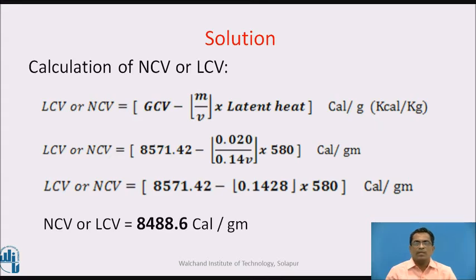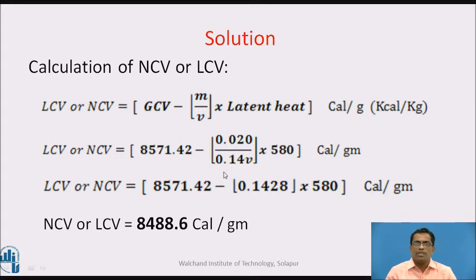LCV can be calculated using the formula: LCV or NCV = GCV − (M / V) × latent heat. Substituting values: LCV = 8571.42 − (0.020 / 0.14) × 580. Simplifying, LCV = 8488.6 cal/g.